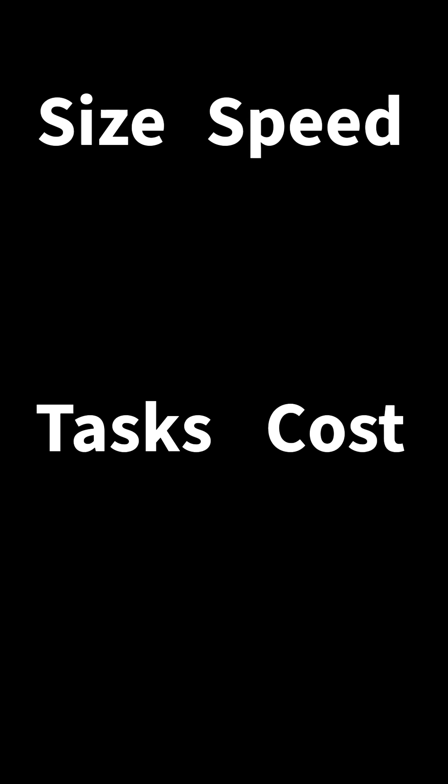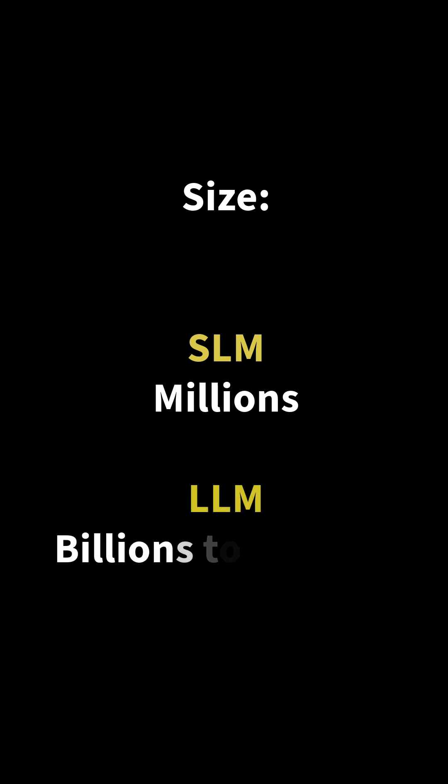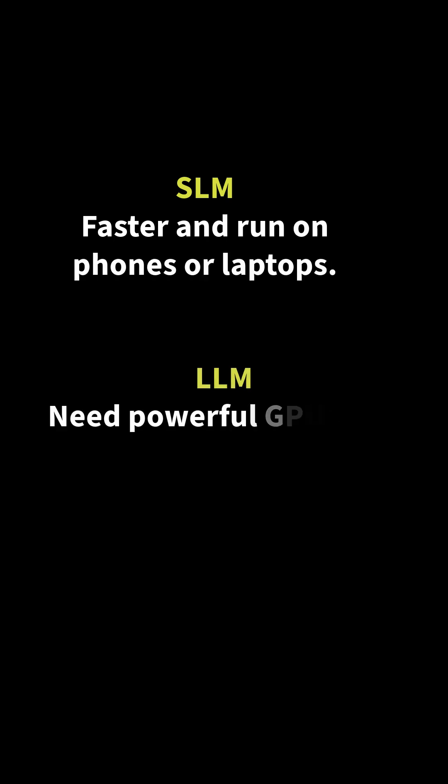So these are the basic differences between these two technologies. It's time to compare them based on size, speed, task, and cost. When it comes to size, SLMs have millions of parameters whereas LLMs have billions to trillions. SLMs are faster and run on phones or laptops, while LLMs need powerful GPUs and are cloud-based.